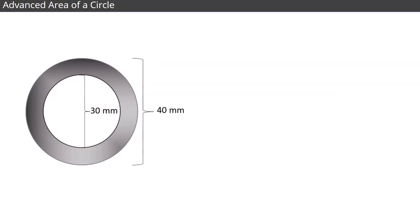Let's look at a more advanced example of finding the area of a circle that's also one you might encounter in your work. This is a bushing, and we need to calculate the cross-sectional area. The bushing has an outside diameter of 40 millimeters, and an inner diameter of 30 millimeters, and the cross-section looks like a ring.